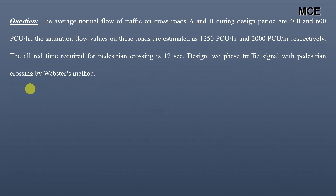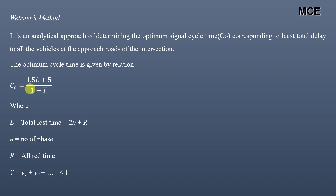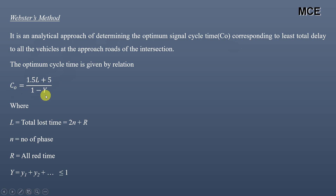First, we will quickly summarize Webster's traffic signal design method. Webster's method is an analytical approach of determining the optimum signal cycle time corresponding to the least total delay to all vehicles at the approach roads of the intersection. This optimum cycle time is given by: C0 = (1.5L + 5) / (1 - Y), where L is the total loss time, given as L = 2n + r, where n is the number of phases and r is the all-red time.